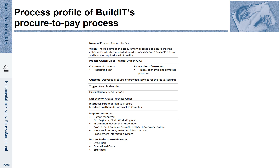Not only the sequential, decompositional and specialization relationships between processes have to be understood. Process profiles describe aspects that are important for a process in more detail, but still in a very abstract manner. Here you see an example of a procure-to-pay process of the Build-It company, which we use at several stages of the book as an example.